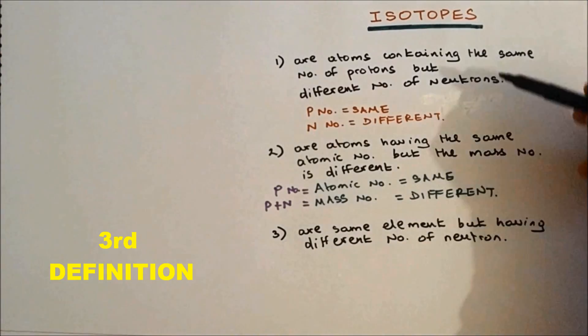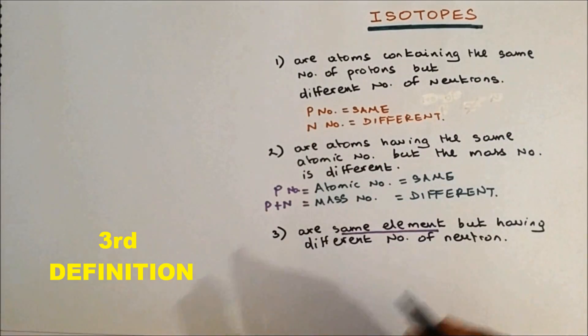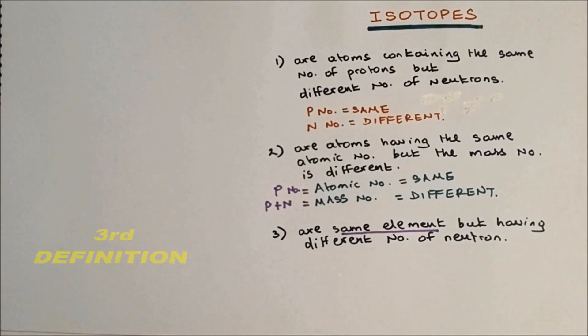The third example is similar to the first one, but here they are the same element. Obviously same element contains the same number of protons.